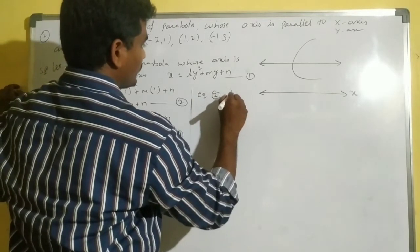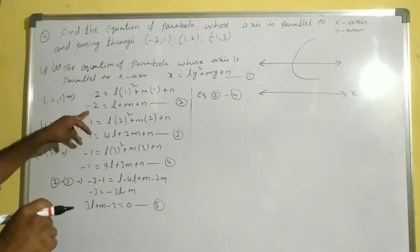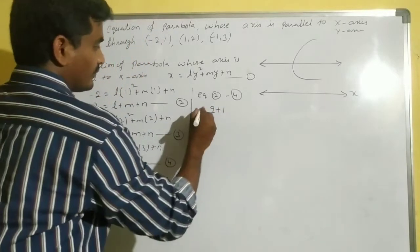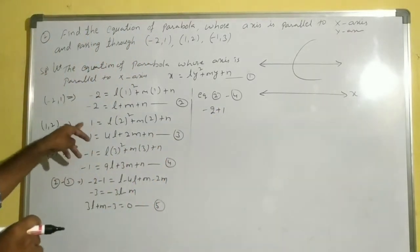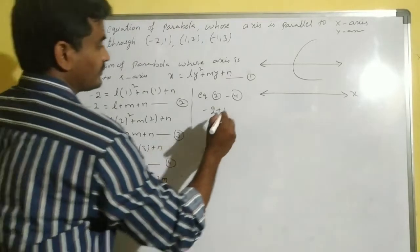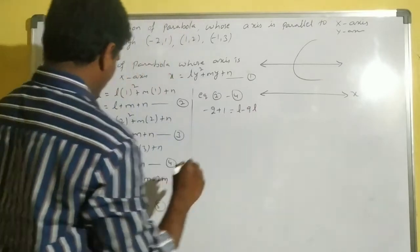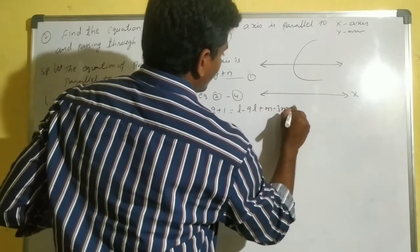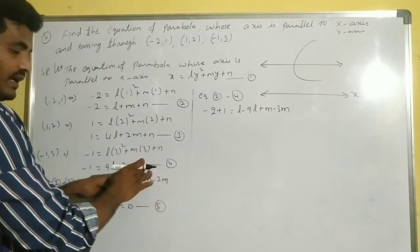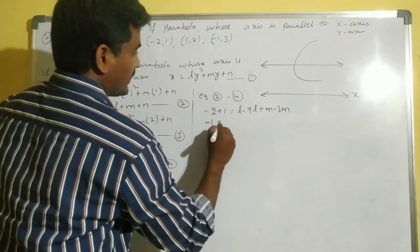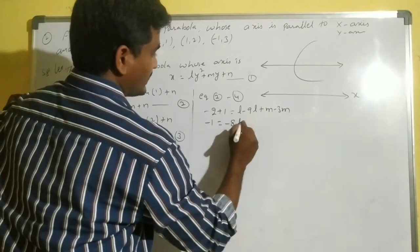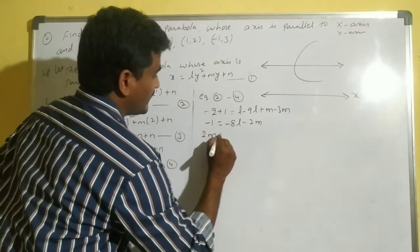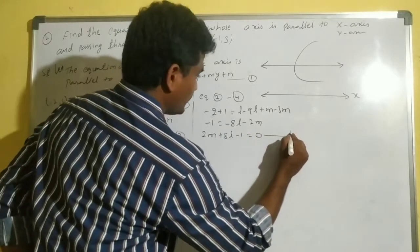Doing equation 2 minus equation 4: -2 - (-1) = -1. On the right: (l - 9l) + (m - 3m) + (n - n) = -8l - 2m. So -1 = -8l - 2m, which gives 2m + 8l - 1 = 0. This is equation number 6.